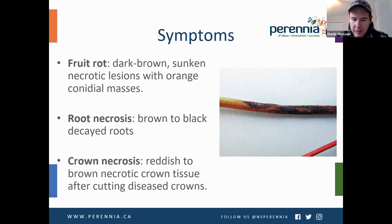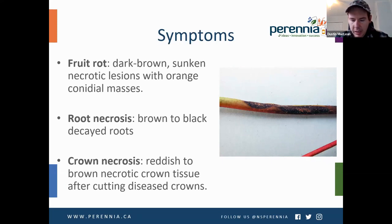Distinct dark sunken lesions may form on petioles, runners, and crowns. These lesions may cause daughter plants to die, outer leaves to die prematurely, or the plant may collapse from crown rot. Infected crowns, when cut lengthwise, are discolored with reddish-brown streaks creating a marbled effect. Infections during bloom result in dead, dried-up flowers or small, hard, dried-up fruit.